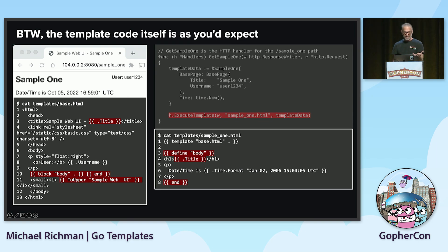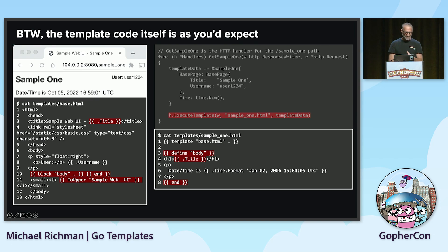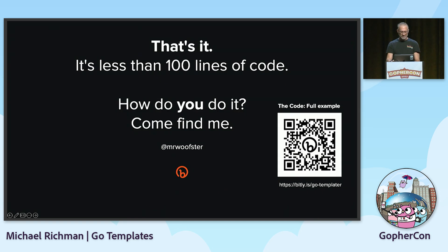Under the covers it's all the same HTML stuff you'd expect to see. On the left is the base HTML file — your common elements like open HTML tags, the head section, static JS and CSS. At line 10 you see the block body definition, and the sample is on the right.